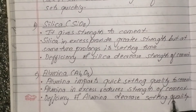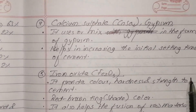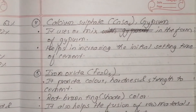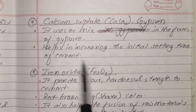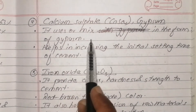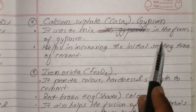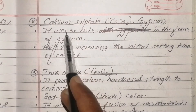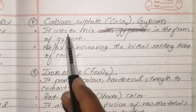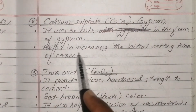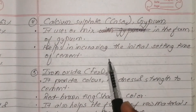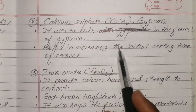Next is calcium sulfate, CaSO4, also called gypsum. It is used in the form of gypsum mixed into cement. Calcium sulfate increases the initial setting time of cement.